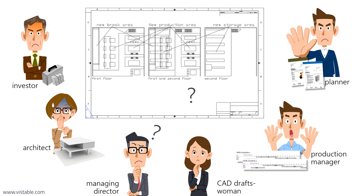In the end, everyone understood the plan differently because the 2D plan is too abstract and allows for different interpretations. So everyone worked in different directions, a lot of time was wasted, and the project was delayed. Everyone involved is now frustrated and demotivated. Even if the example is a bit exaggerated, the limitations of 2D planning should be clearly apparent.